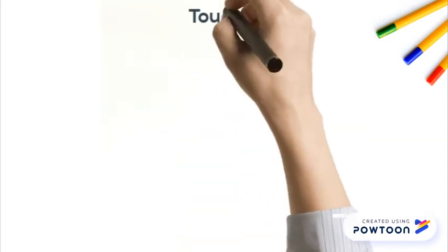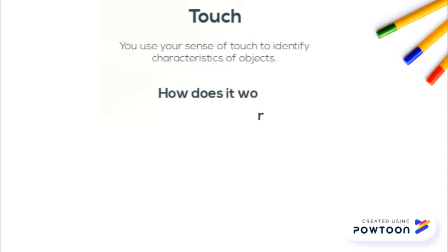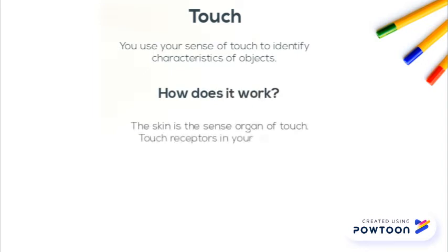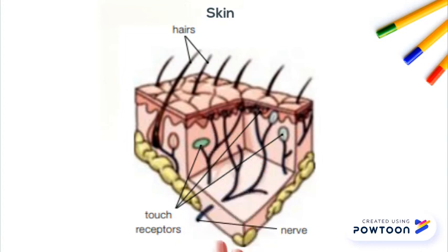Touch. You use your sense of touch to identify characteristics of objects. How does it work? The skin is the sense organ of touch. Touch receptors in your skin send information to the brain. This is a picture of skin where you can see hairs, touch receptors, and the nerve.